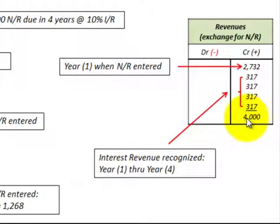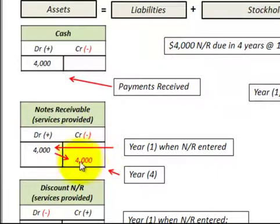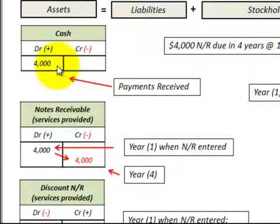That was what our notes receivable was worth at the end of the fourth year. When we received the notes receivable, we credit notes receivable by $4,000, bringing it to a zero balance. The associated debit entry is to cash, where we increase our cash account by $4,000.